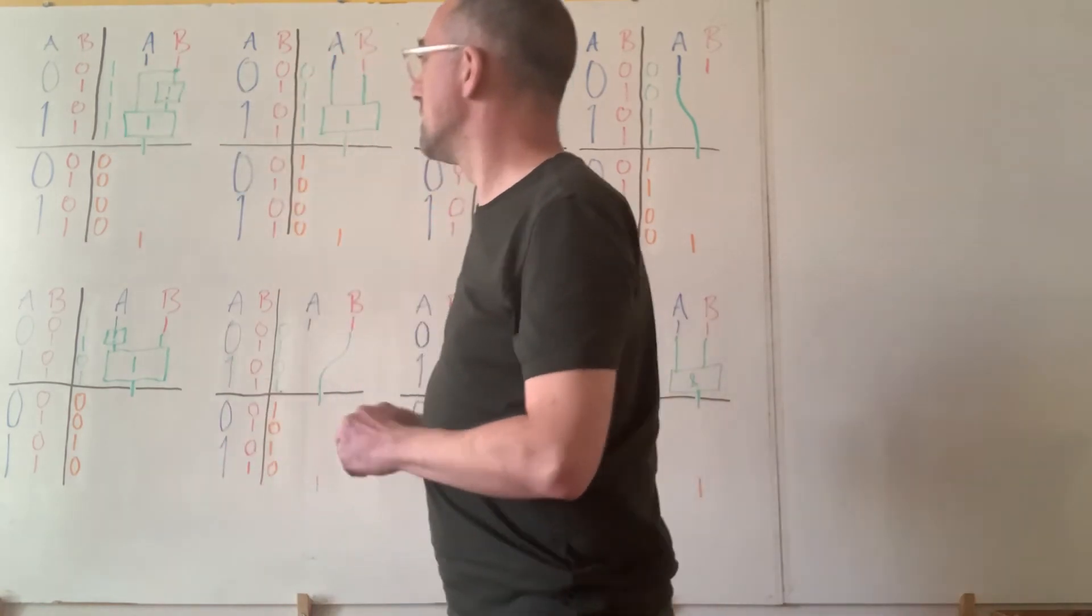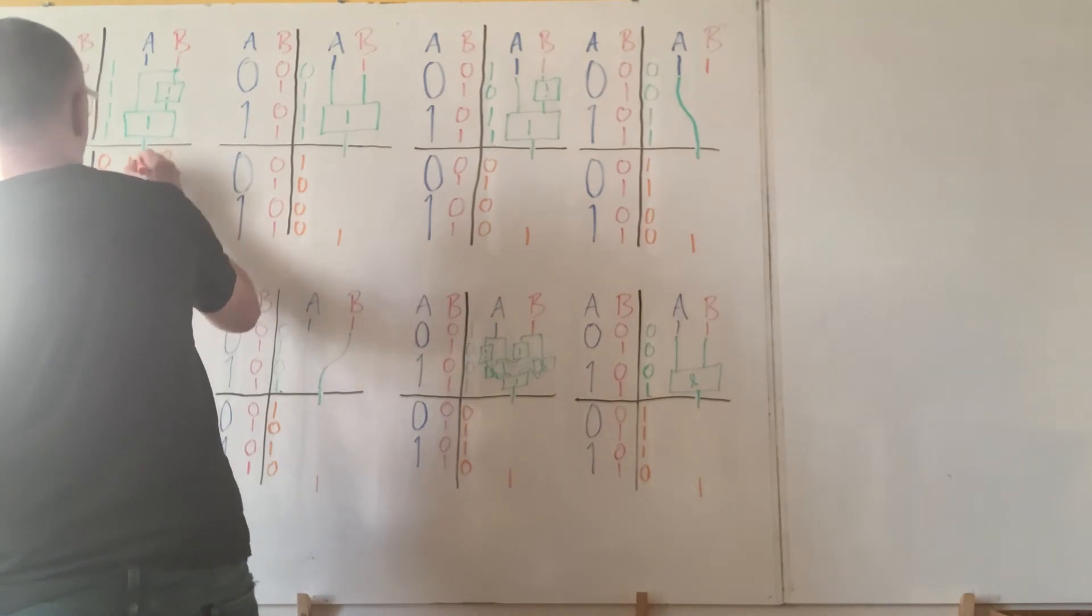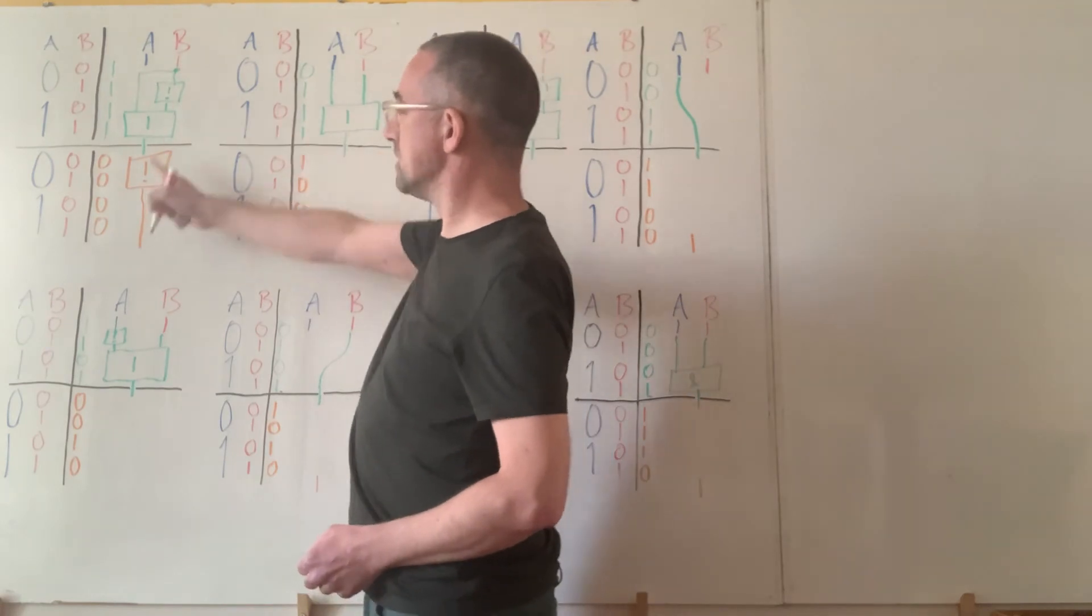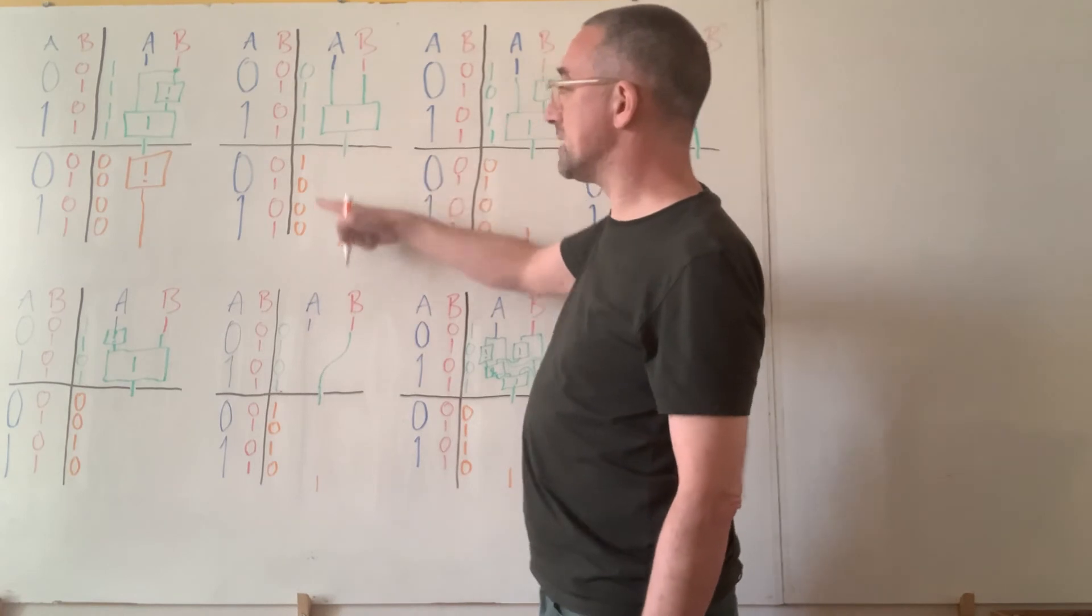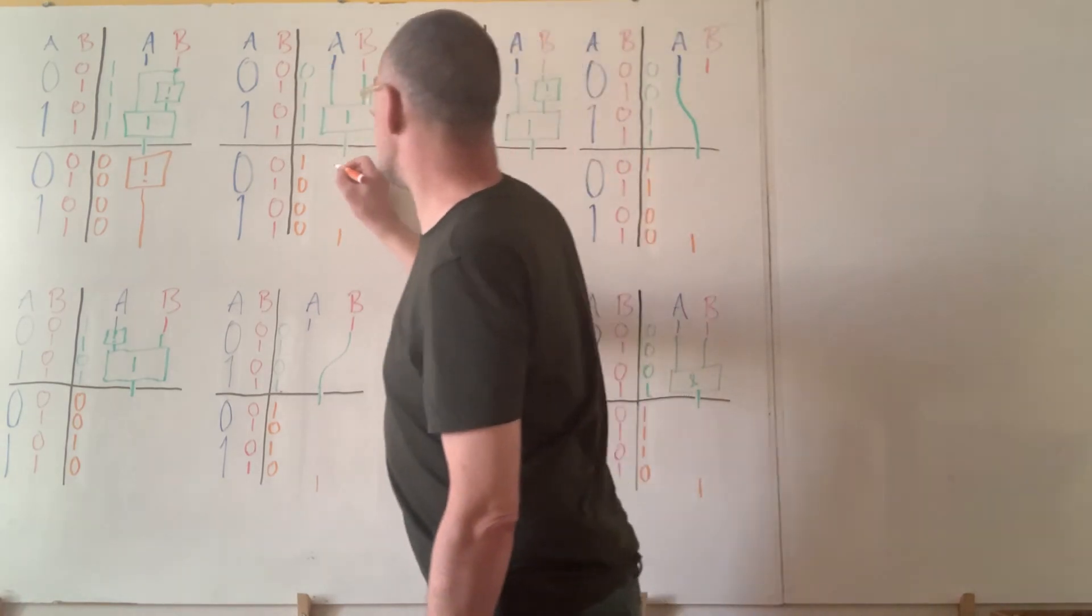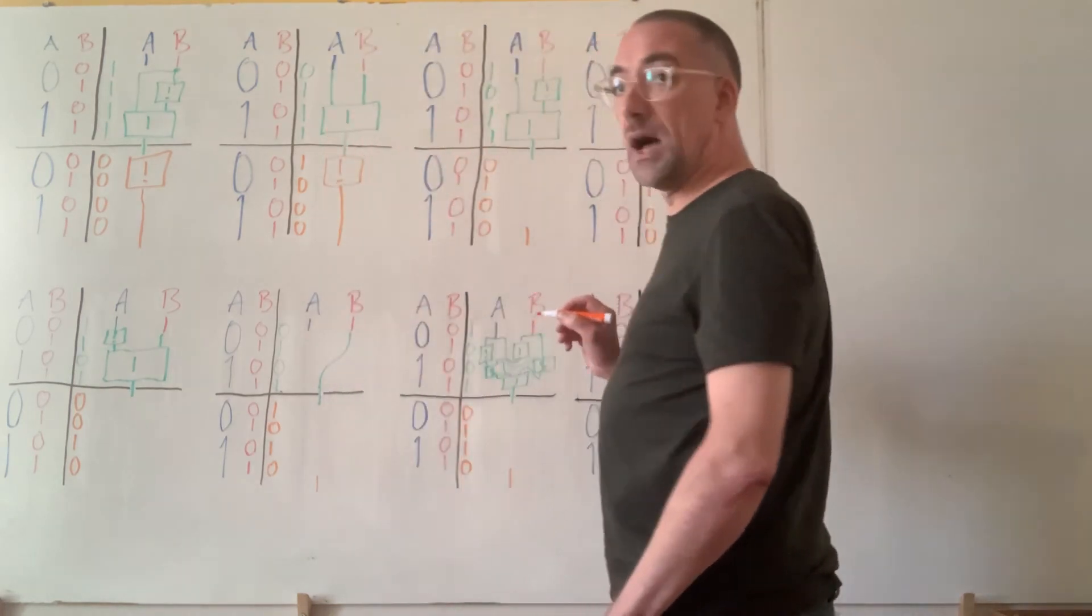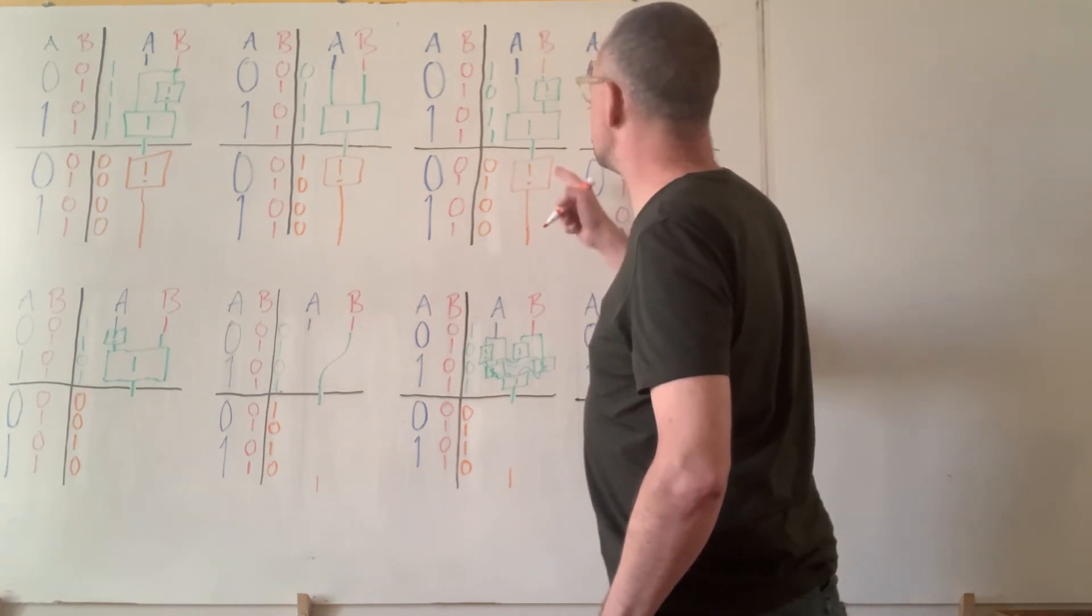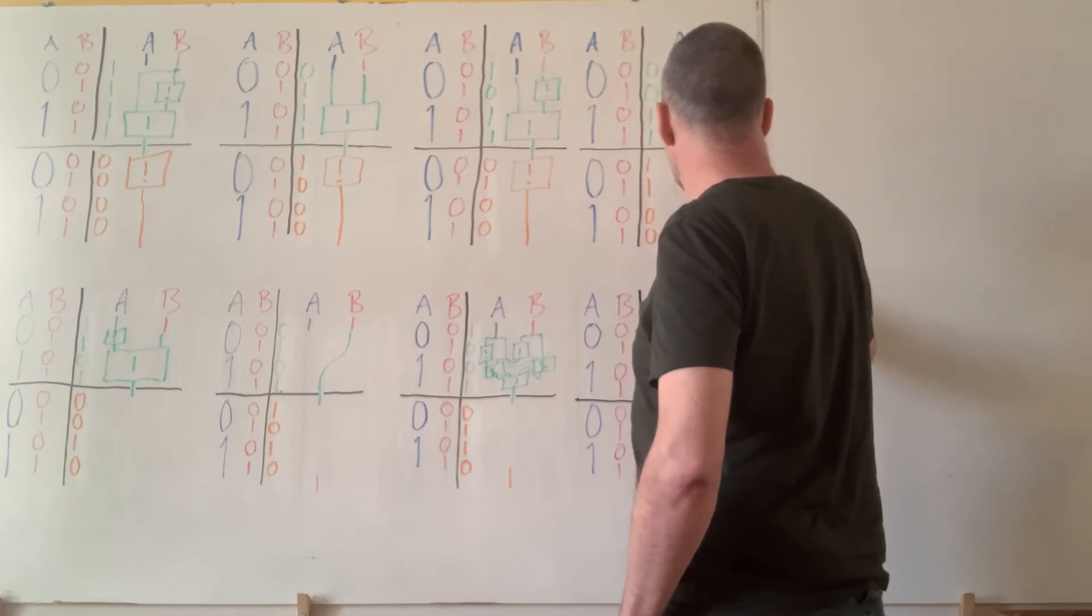They're all exactly the opposite of that, and I can fix that just by saying no to the green circuit. The orange circuit says no so it negates the output of the green circuit. Okay. And similarly here, this orange circuit is the exact negation of this green circuit, and this orange circuit is the exact negation of that green circuit, and so on all the way along.